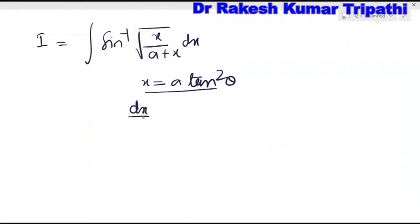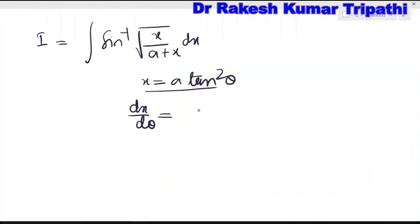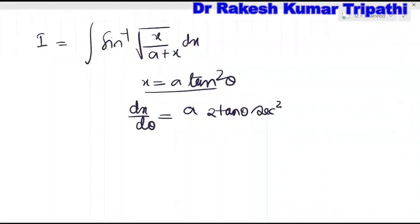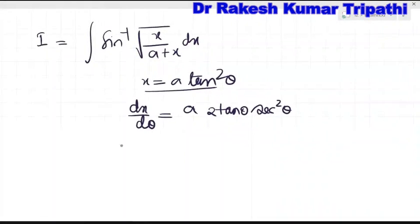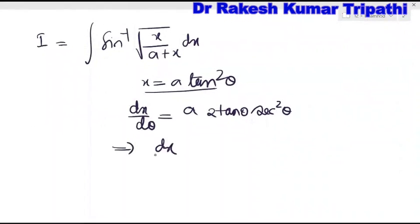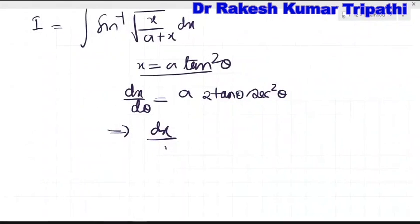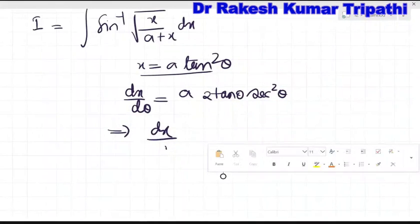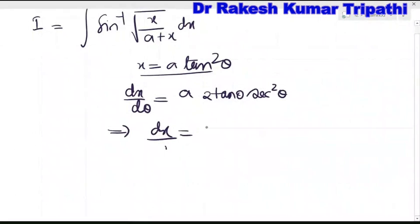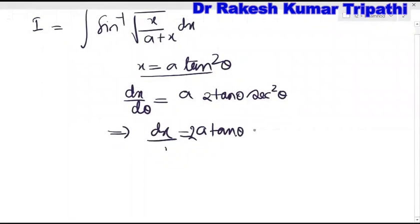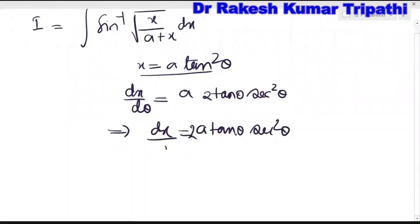Differentiating x = a·tan²θ with respect to θ: dx/dθ = a constant times 2·tanθ times the differentiation of tanθ, which is sec²θ. So dx/dθ = 2a·tanθ·sec²θ, and therefore dx = 2a·tanθ·sec²θ dθ.